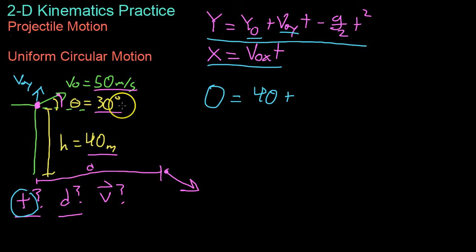So we have to use some trigonometry. If you have a 50 meter per second vector you have your two components, your y component and your x component. You have your x component and your y component like that. And let's say the angle here is 30 degrees.